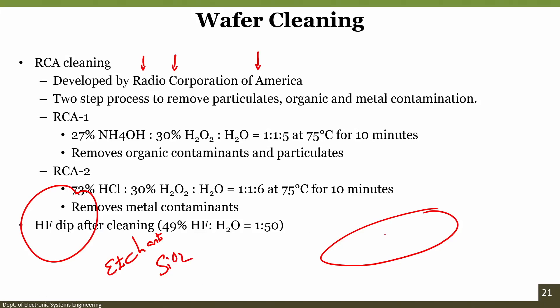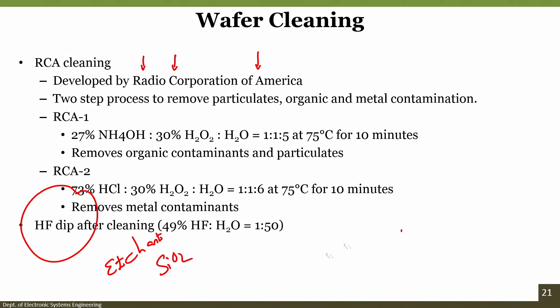How is silicon dioxide grown? When oxygen reacts with silicon wafer, it forms silicon dioxide. We will see in a few slides how the silicon dioxide process is done. Before that, let us see the importance of silicon and how it is used to fabricate chips.